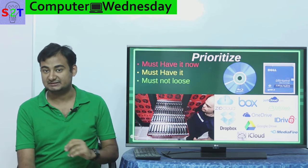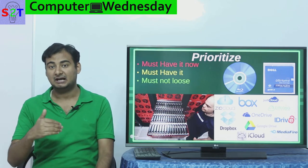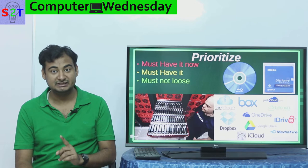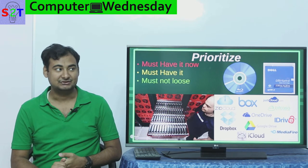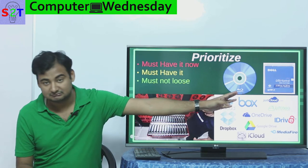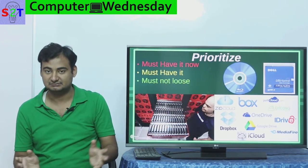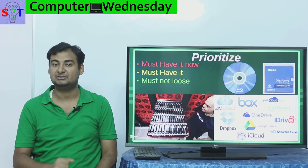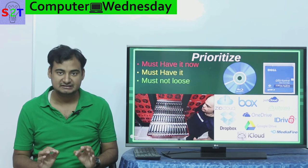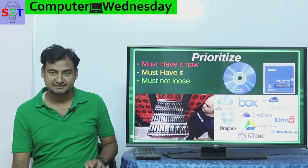The third and most crucial tier is 'must not lose.' This is especially common for hobbyist photographers. It may not be precious right now and you don't urgently need access to it, but you absolutely cannot afford to lose it permanently. I've lost one day's worth of photos from a family trip and I still regret it. For this tier, tapes are the best option for studios dealing with large data, while other dedicated backup solutions work well for individual photographers — they can preserve photos for 10 to 35 years.